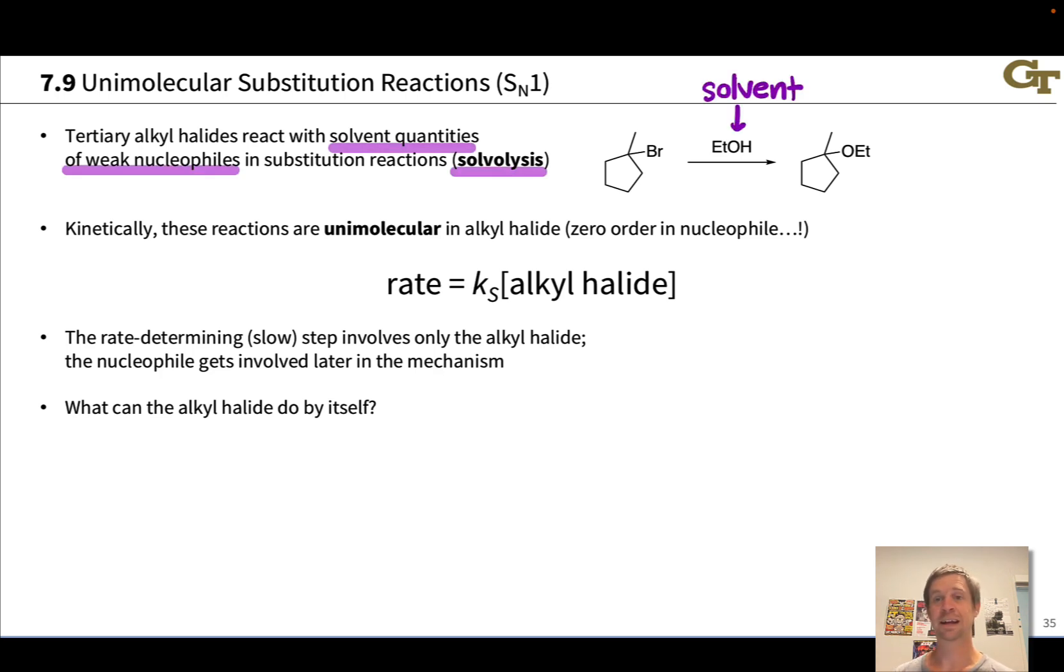since the nucleophile is used in solvent quantities, as the solvent, in very large excess. And it's a nucleophilic substitution because we have a nucleophile here, the oxygen and ethanol, displacing a leaving group, this bromine. So this is a nucleophilic substitution reaction.